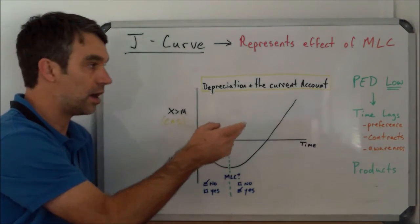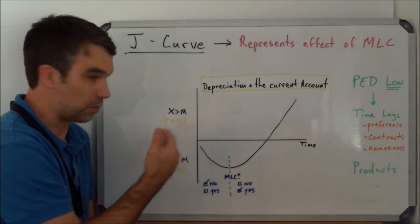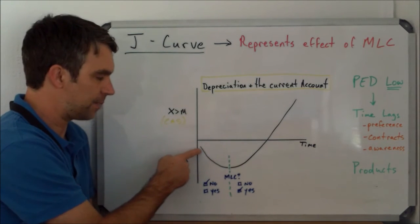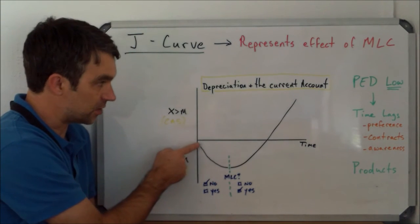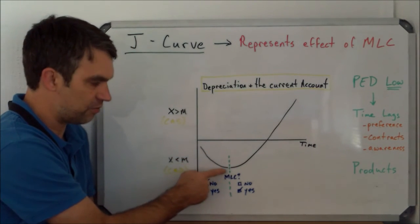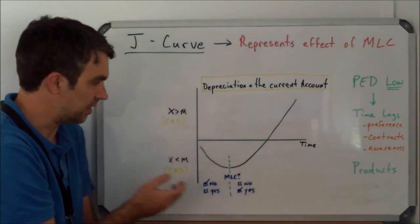Because the PED is low for both exports and imports, the Marshall-Learner Condition is not going to be satisfied. So you'll see the current account get further and further into current account deficit.